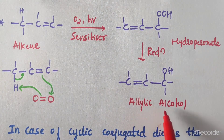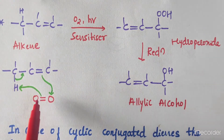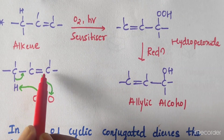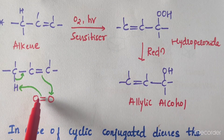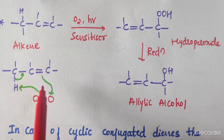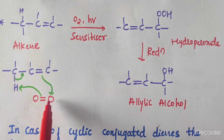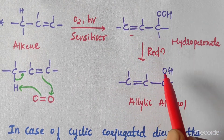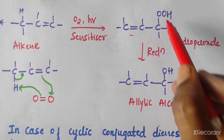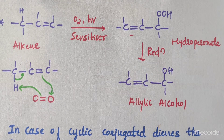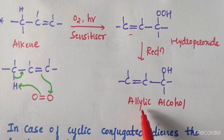Alkenes can be converted into allylic alcohols with oxygen as an oxidizing agent. Oxygen is added across the double bond. The pi electrons abstract the proton, the double bond shifts toward the carbons, and the pi electrons attack oxygen, giving a hydroperoxide intermediate. On reduction, one oxygen atom is eliminated and we get allylic alcohol.